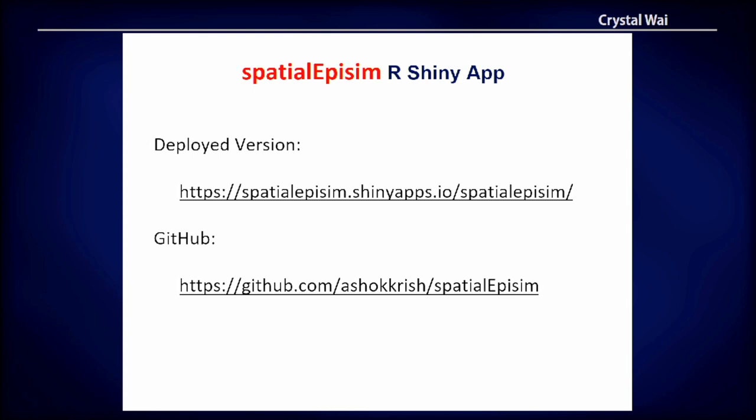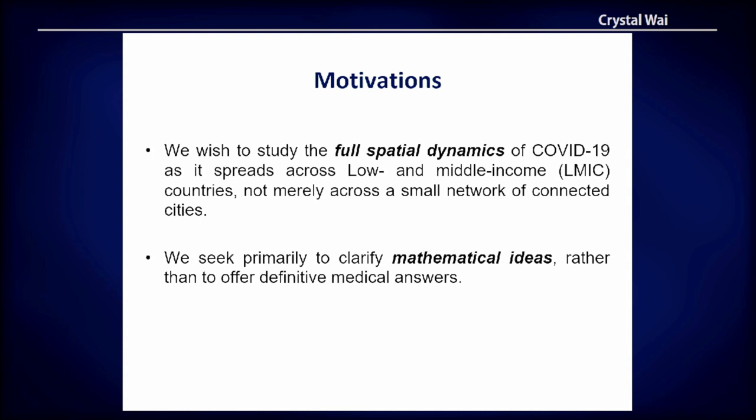The presentation will be available upon request, and there is a deployed version on the Shiny app server as well as our GitHub. Our key goal is to track COVID-19, though the app is adaptable to any infectious disease. Our primary emphasis is on low and middle income countries given the socioeconomic situation and limited resources, but it is applicable to all countries.